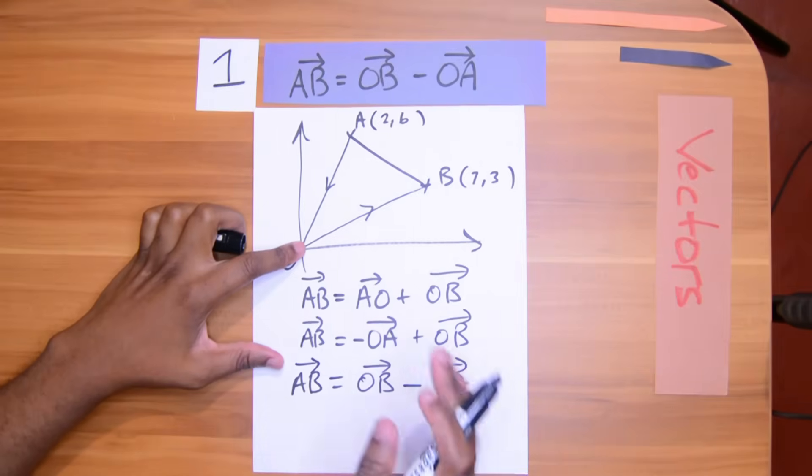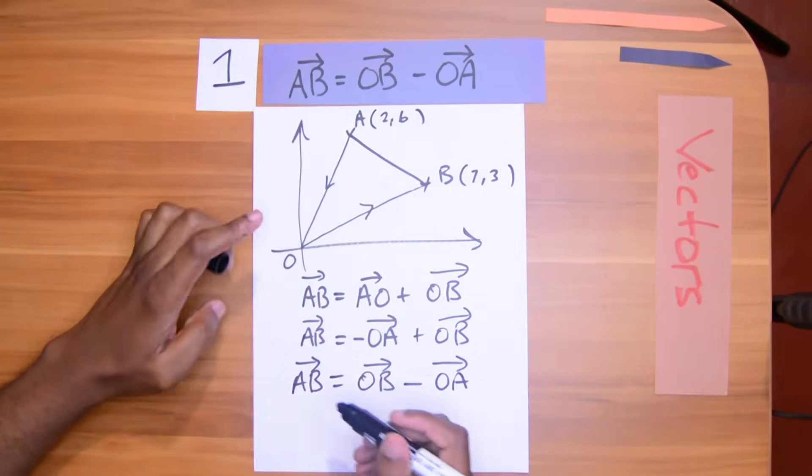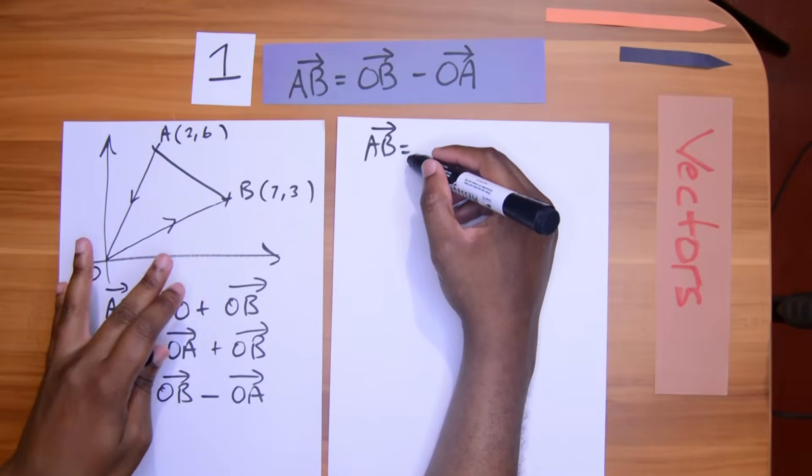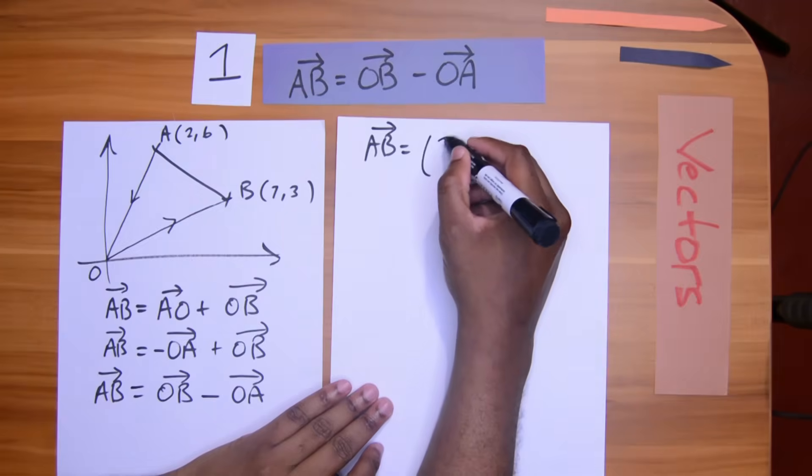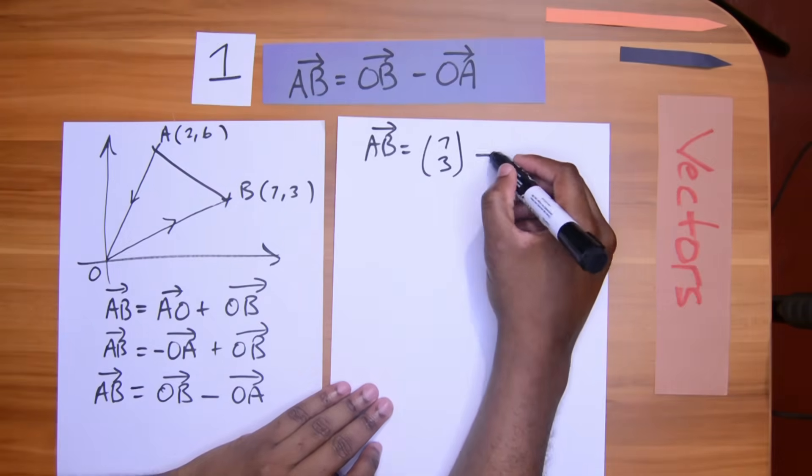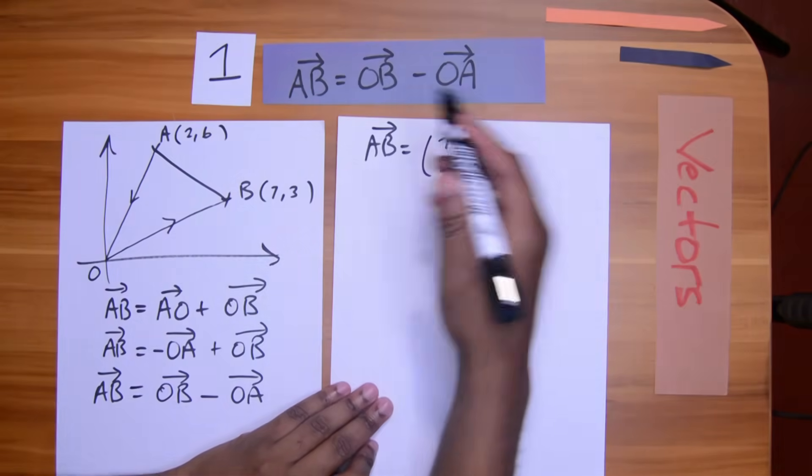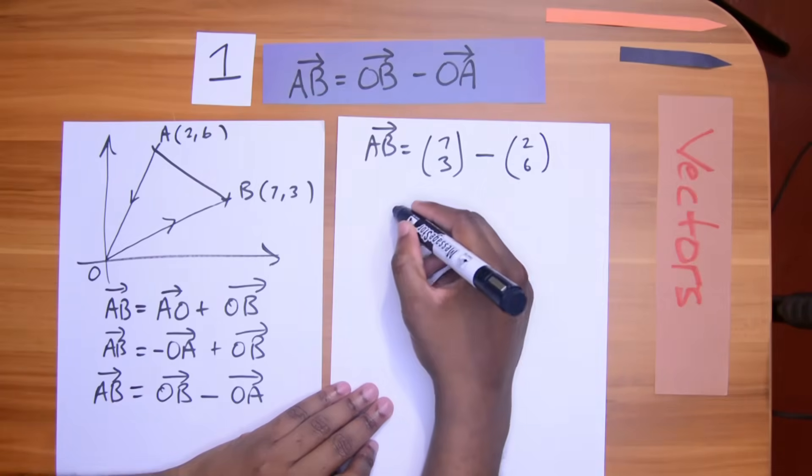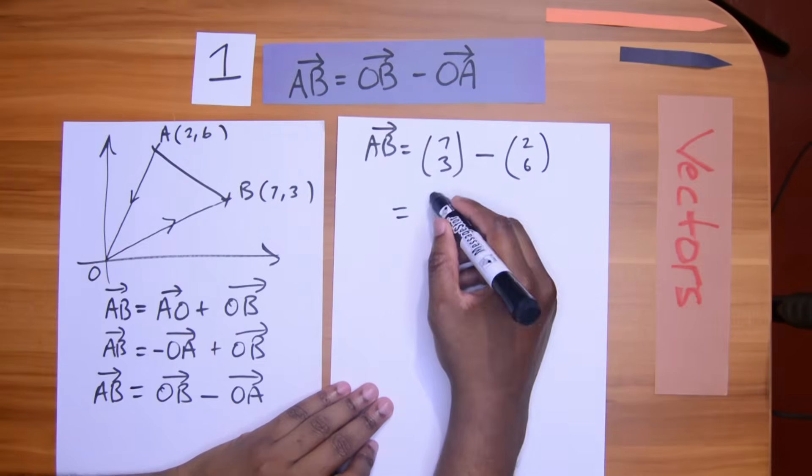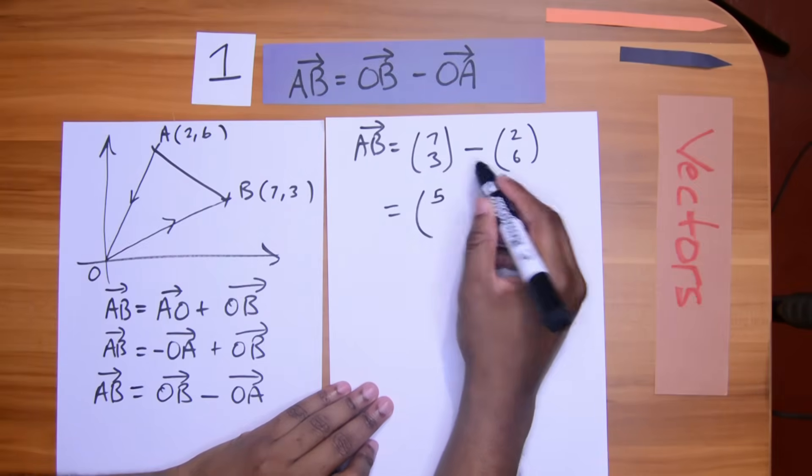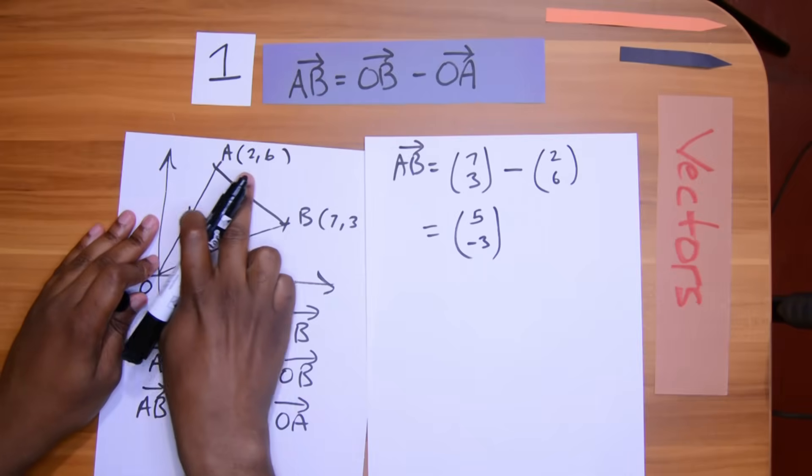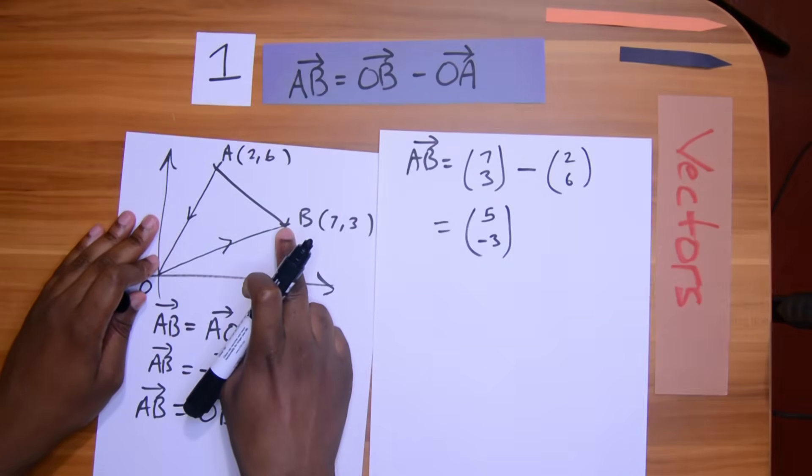So let's solve this question just for kicks using the triangle law. AB would be equal to OB, seven, three, take away OA, two, six. It turns out that AB is going to be seven take away two is five, three take away six is negative three. So it means the vector AB is going across by five and then dipping down by three.